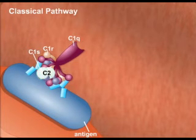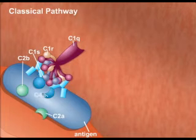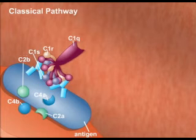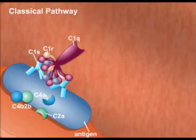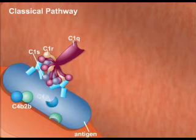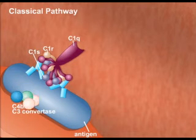C1S then acts on C2, cleaving it into C2A and C2B. Then C1S cleaves C4 into C4A and C4B. C2B and C4B bind to the cell near the antigen-antibody complement complex, and C2A and C4A are released. This complex of C4B and C2B, called C3-convertase, has protease activity and cleaves C3 into C3A and C3B.